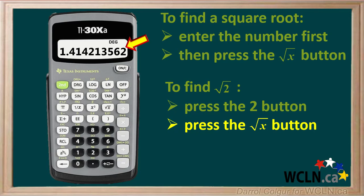The square root of 2 is an irrational number, so it has an infinite number of decimal places, but the display on this calculator can hold a maximum of 10 digits. So the value shown is an approximation of the square root of 2 rounded to 9 decimal places.